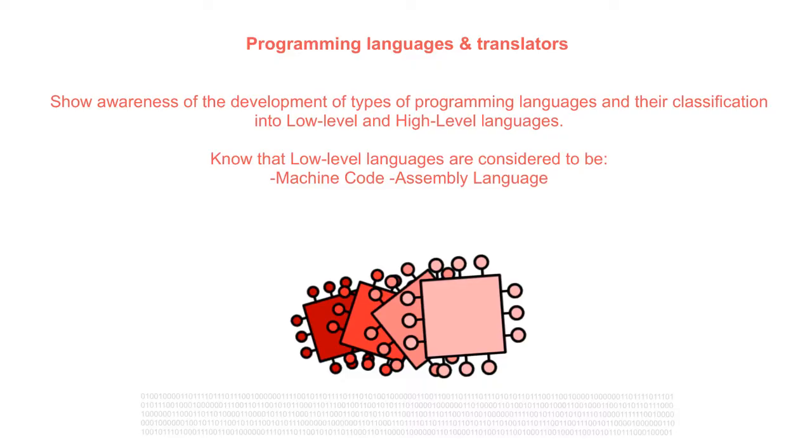By the end of this video you will have an awareness of the development of types of programming languages and their classification into low and high level. You'll also know that low level languages are considered to be machine code and assembly language.